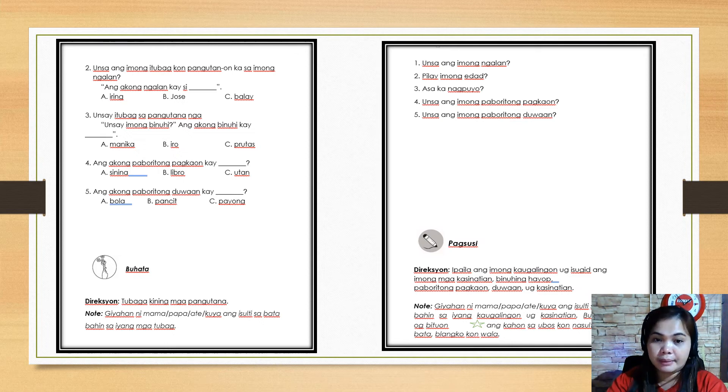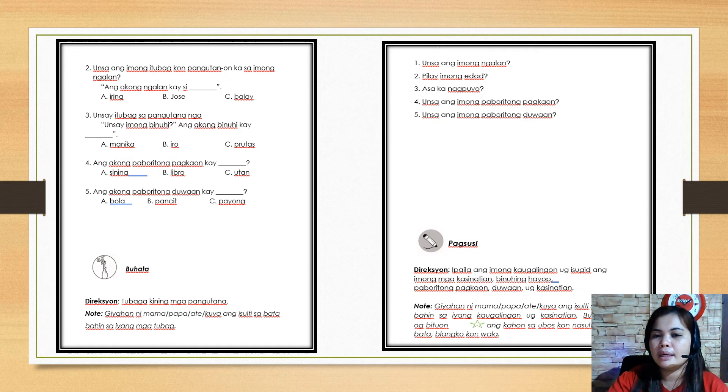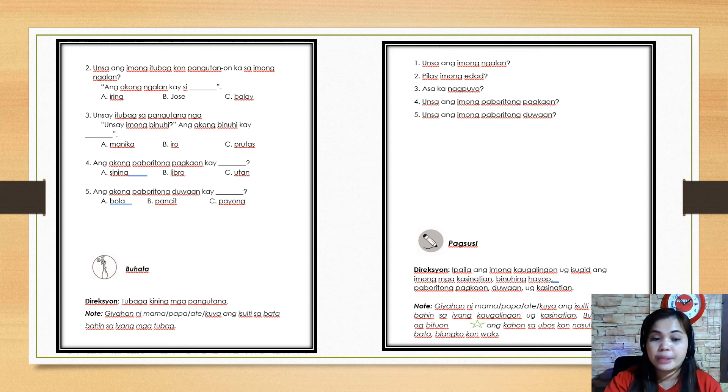Next number five: ang akong paboritong duwaan kay - my favorite toy is A: bola or ball, B: pansit or noodles, C: payong or umbrella. We're almost done. You answer these questions again, JB. Number one: what is your name? Number two: how old are you? Number three: where do you live? Number four: what is your favorite food? And number five: what is your favorite toy?